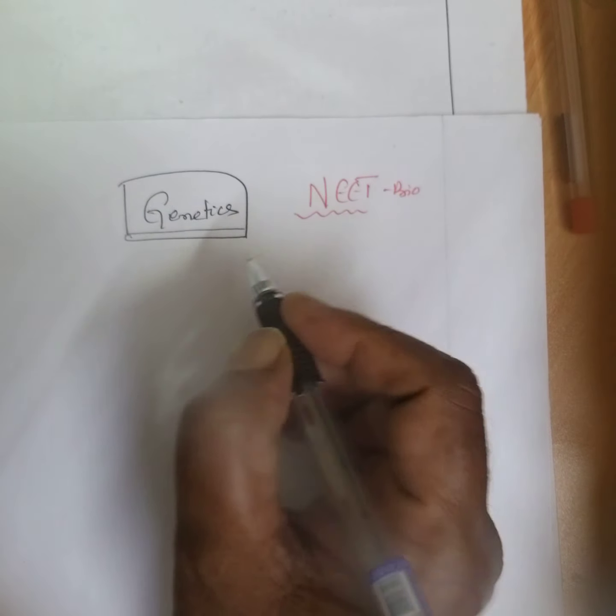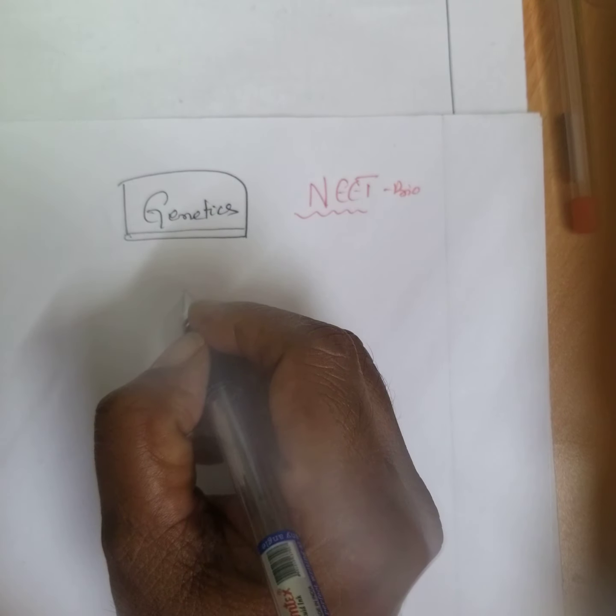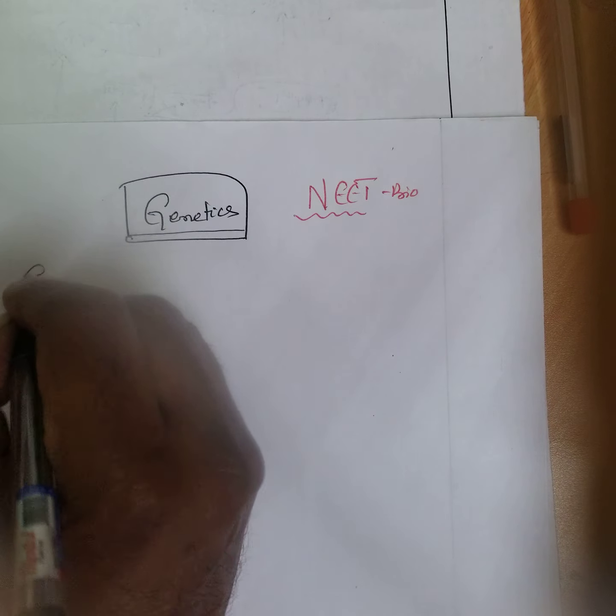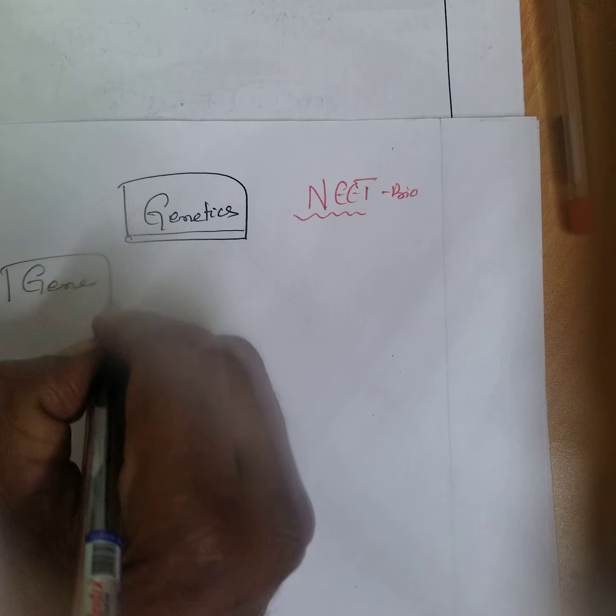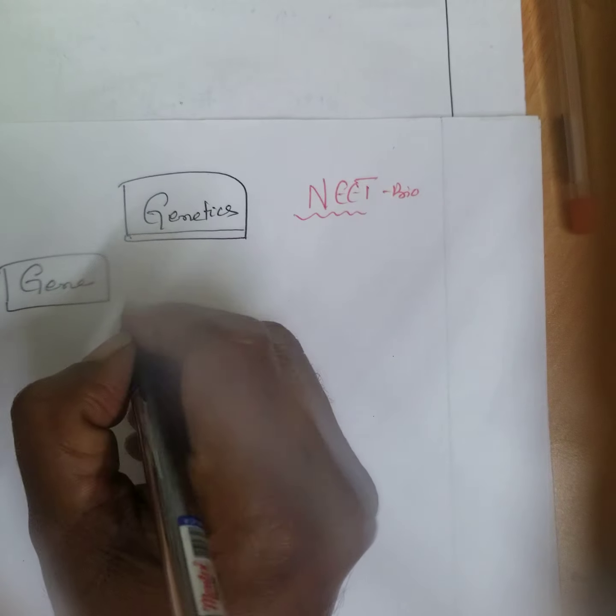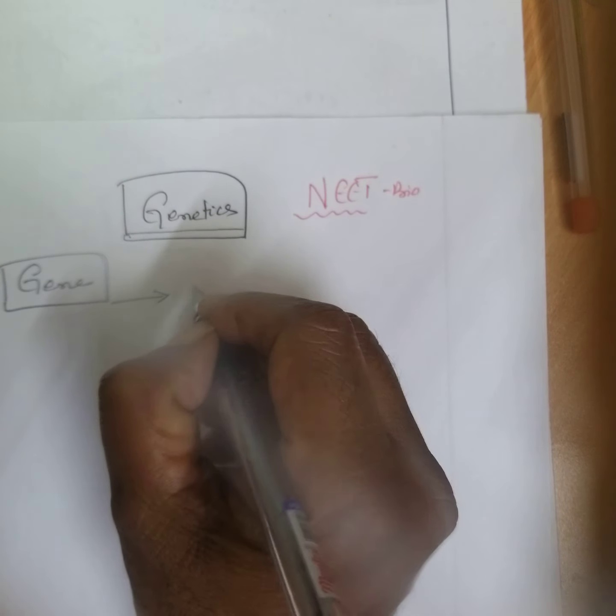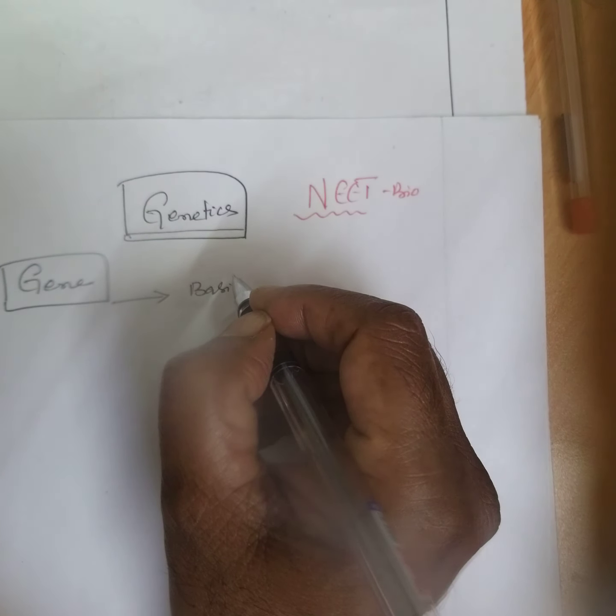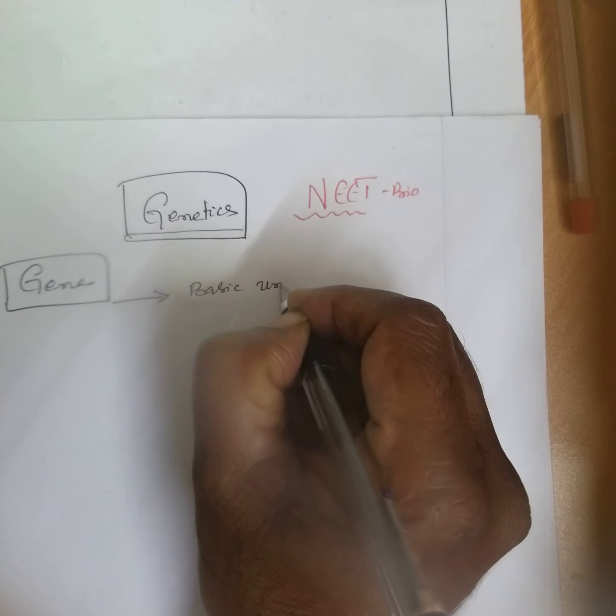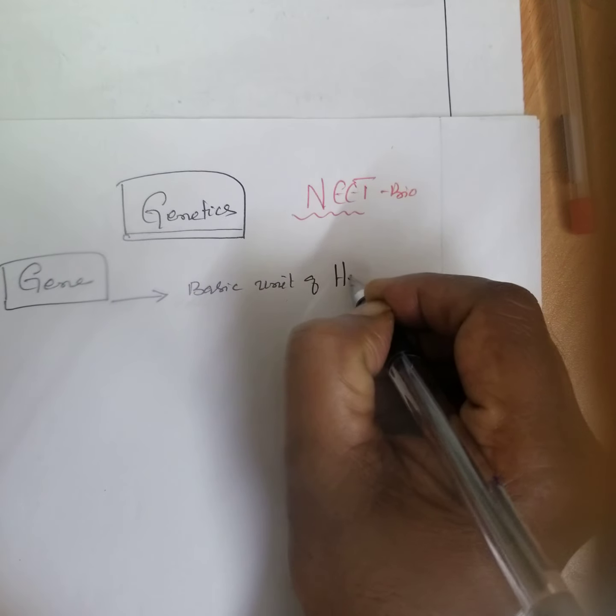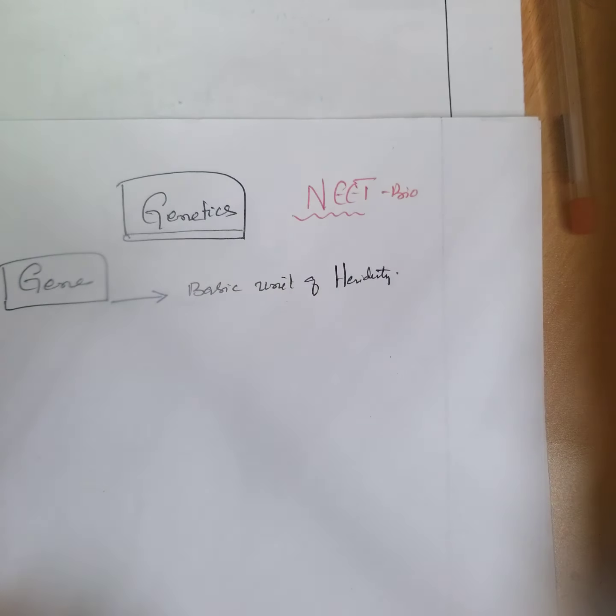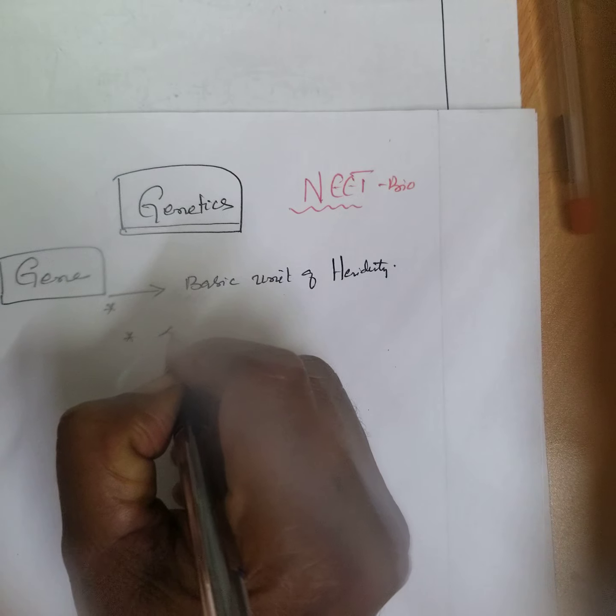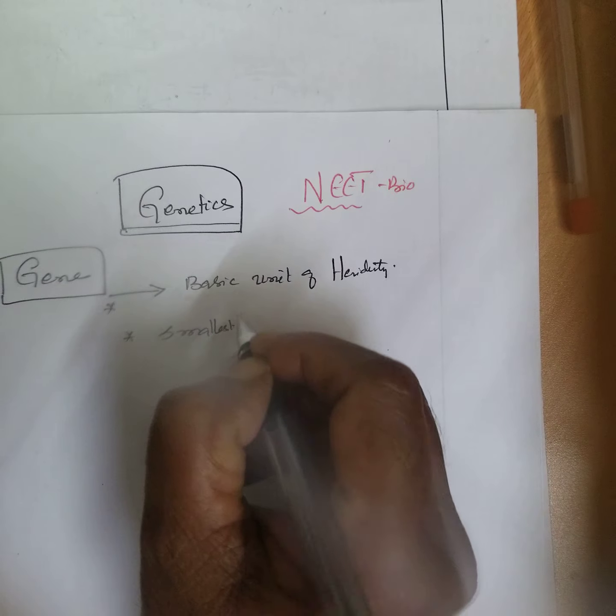In genetics, there are some basic terms you must know. The first term is gene. What are genes? These are the basic unit of heredity, and also the smallest functional unit in DNA.